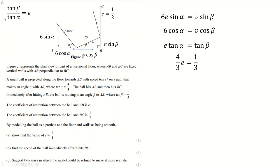They've told us tan α is 4/3 and tan β is 1/3. Substituting those values in gives E equals (1/3) divided by (4/3), which is 1 over 4. That gets all the marks.